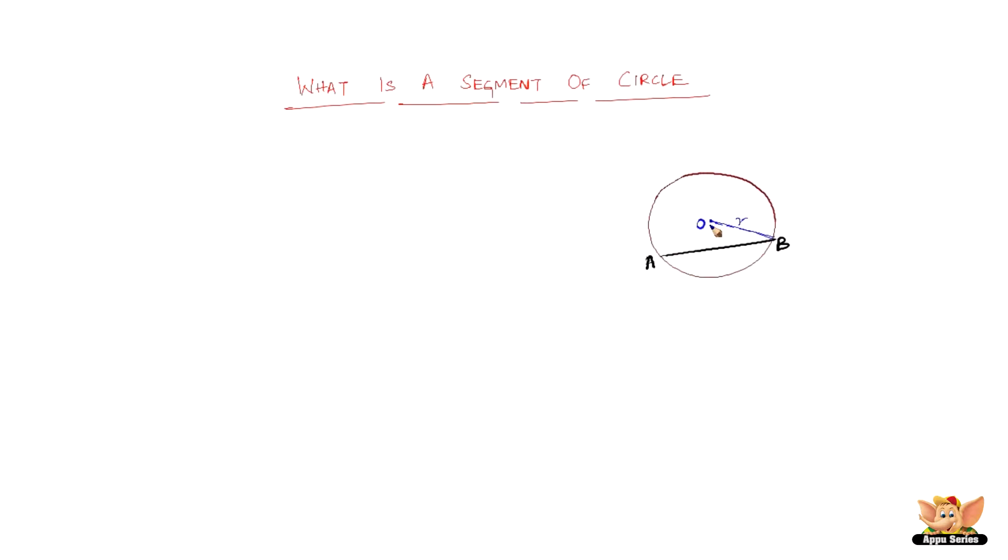Now let us consider this circle with center O and radius R. And say let us consider a line segment AB that joins two points of a circle. Now you know that this is also called as a chord.